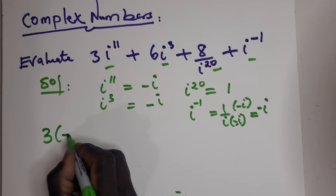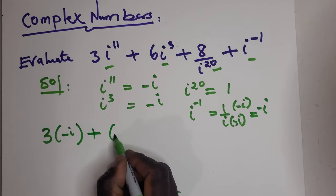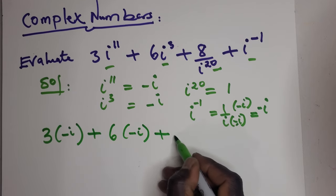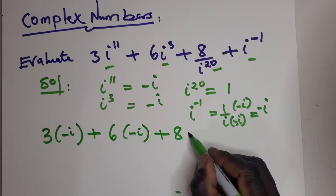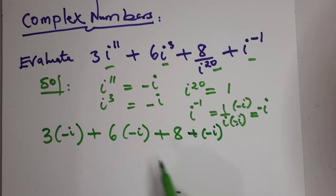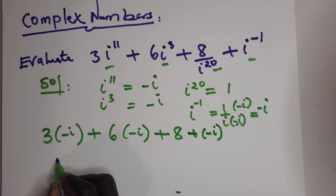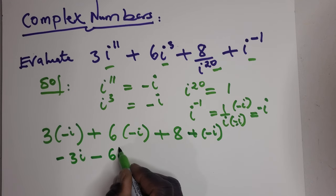negative i plus 6 negative i plus 8, because we know that it's all positive, plus negative i. Now collect the like terms. So that is negative 3i plus negative 6i minus i plus 8.